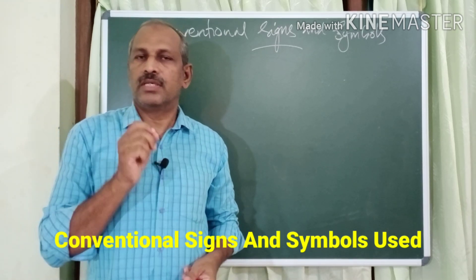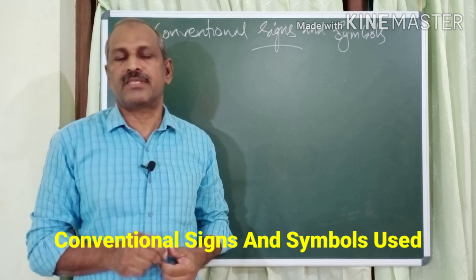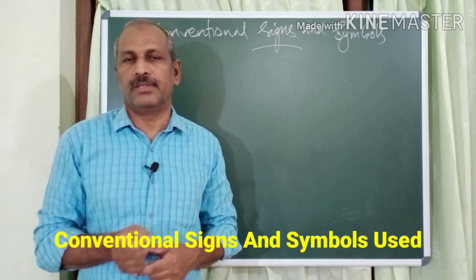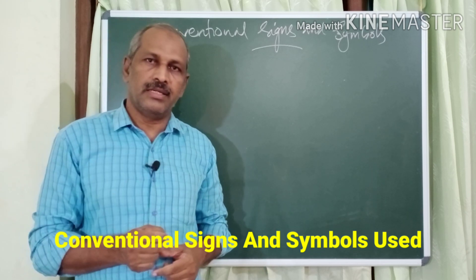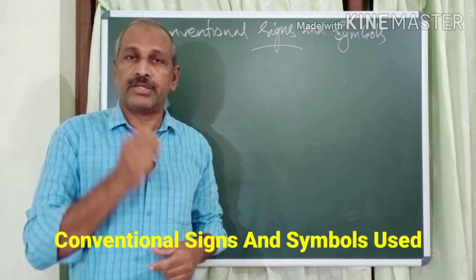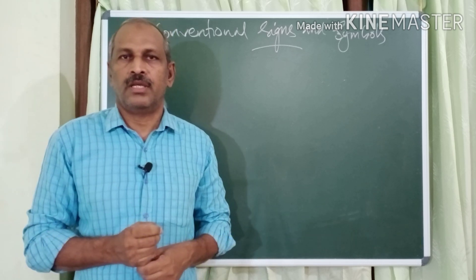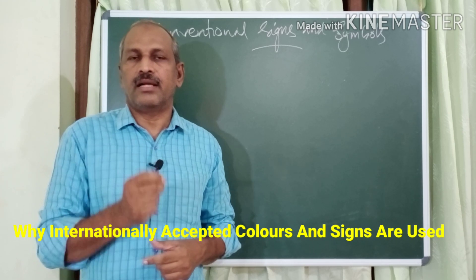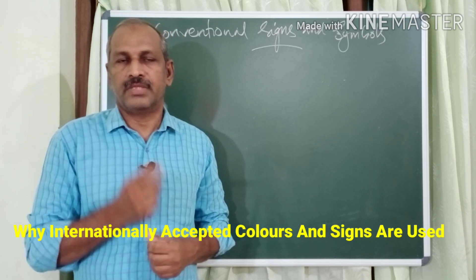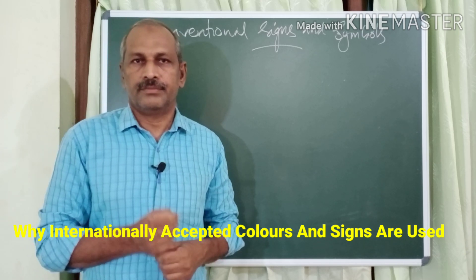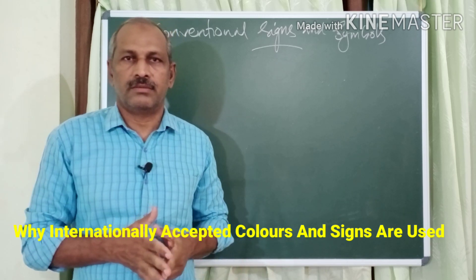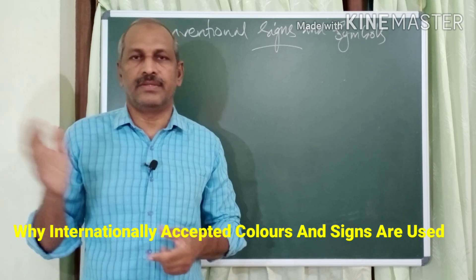Various features on earth's surface are represented in the topographic map by using different colors and symbols. These colors and symbols used in topographic maps are internationally accepted ones. The reason is very simple.